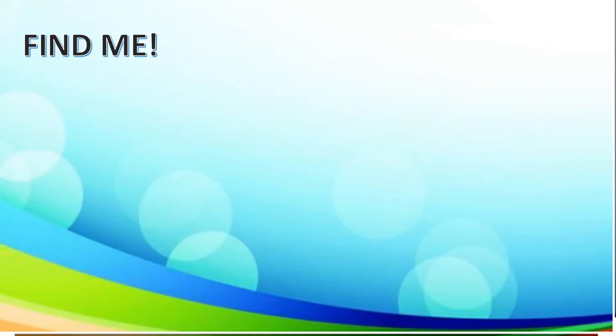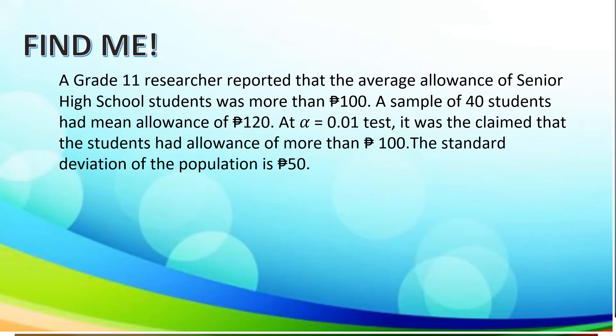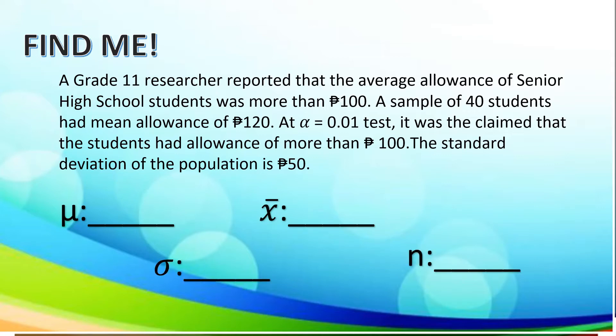To begin with, let us do the activity entitled Find Me. Given this situation, we are going to determine the following unknowns: the mean of the population, the mean of the sample, the standard deviation of the population, and the number of samples. Let us read first the given situation.